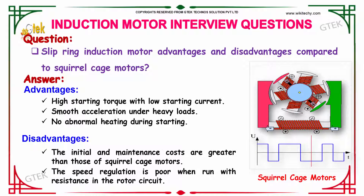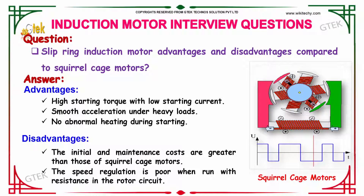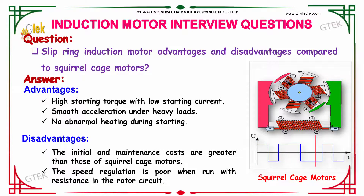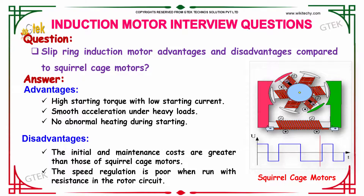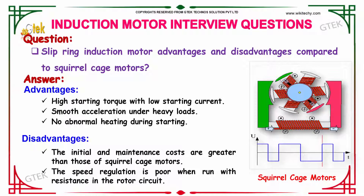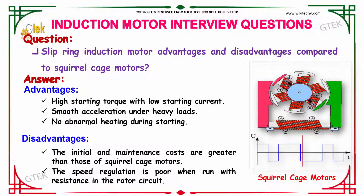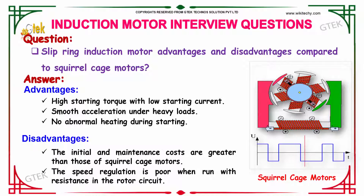These are the advantages. Looking at the disadvantages, the first is that the initial and maintenance costs are greater than those of squirrel cage motors. The second is that speed regulation is poor when run with resistance in the rotor circuit. This covers the comparison of advantages and disadvantages of the slip ring induction motor versus squirrel cage motors.